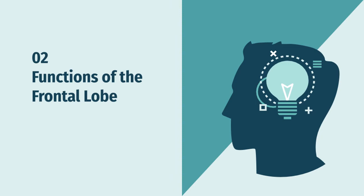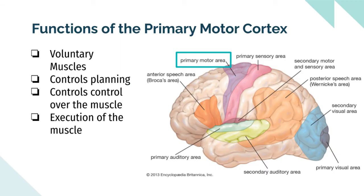Second, I'm going to explain the functions of the frontal lobe. First up, we have the primary motor cortex. The primary motor cortex controls, plans, and executes the voluntary muscles. Voluntary muscles are muscles you can choose to start and stop — an example of this is your hand, which you can move up and down at your own will. The heart isn't a voluntary muscle because it cannot be controlled by you; you can't start it or stop it at your own will. Everyday tasks such as tying a shoelace or walking out the front door are controlled by the primary motor cortex.